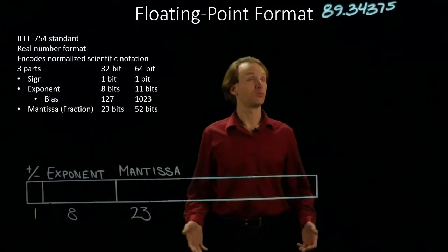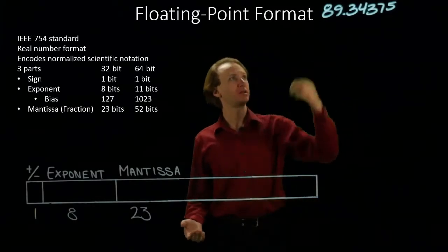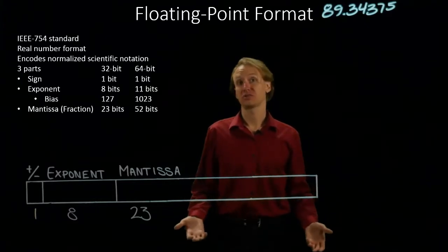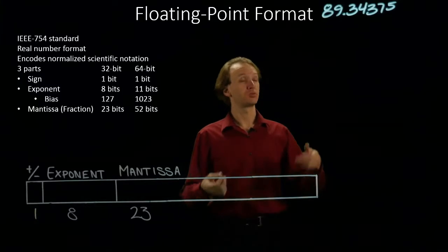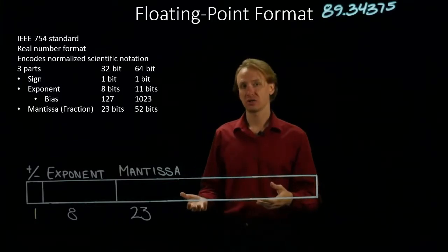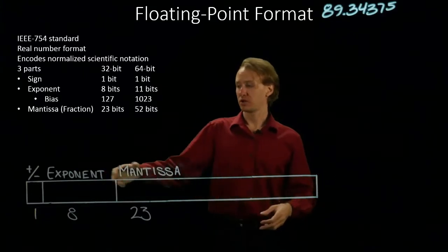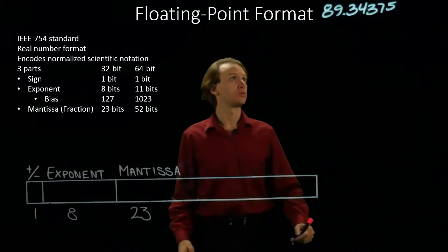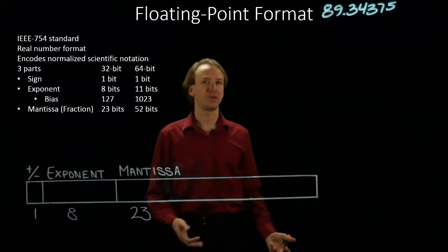This time I've got a bigger, more complex number, 89.34375, but we're pretty much going to do the same thing. We'll convert this number into binary, convert that into normalized scientific notation, and then fill in all of the fields of our floating point format. So, first of all I need to convert this number to binary.